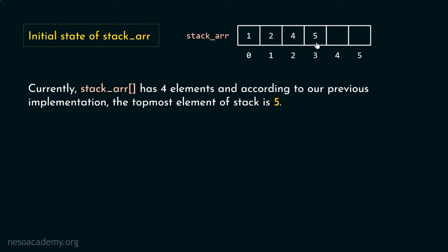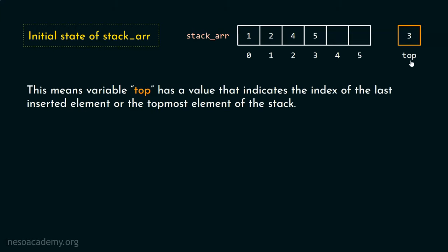The topmost element changes with time. If we try to add a new element, it will be inserted in the next position and then becomes the topmost element. Currently, the top variable is holding value 3, indicating that the topmost element is at index 3. The variable top holds a value that indicates the index of the last inserted element, or the topmost element of the stack.